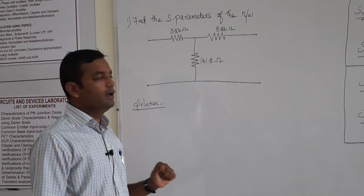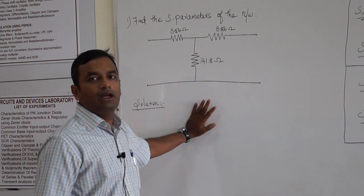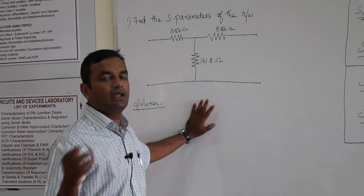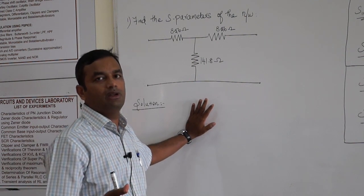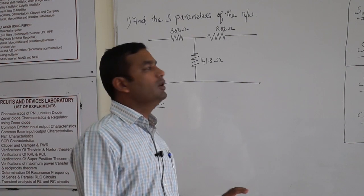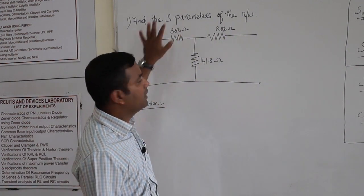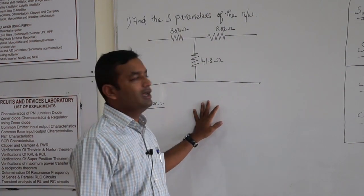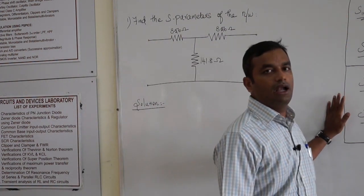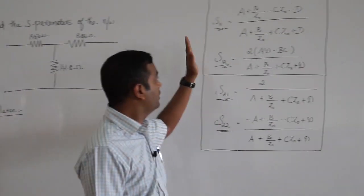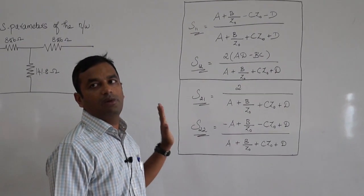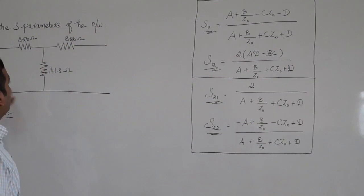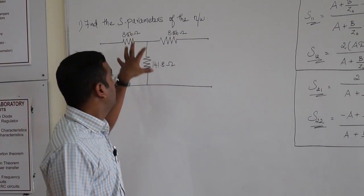To solve this, if you recall the ABCD network — whenever you have networks connected in cascade, the best type of parameter to use is the ABCD network. So the best methodology is to solve the problem using ABCD parameters and then use the conversion formula to convert the ABCD matrix into an S-matrix. Let us write down the ABCD matrix of this particular network.